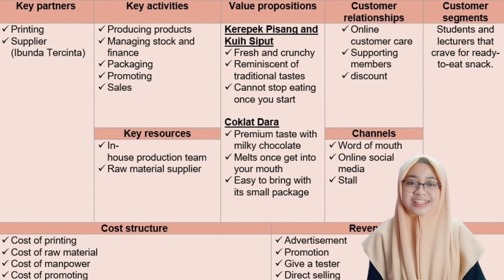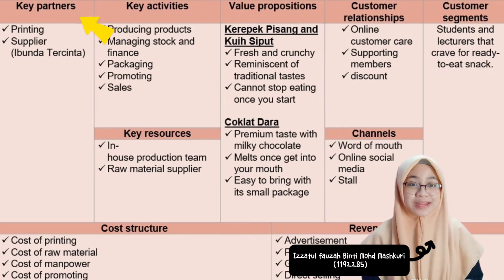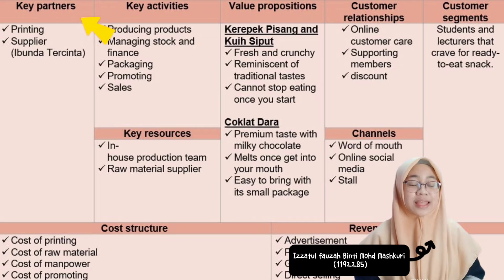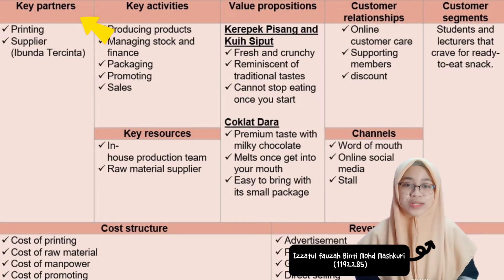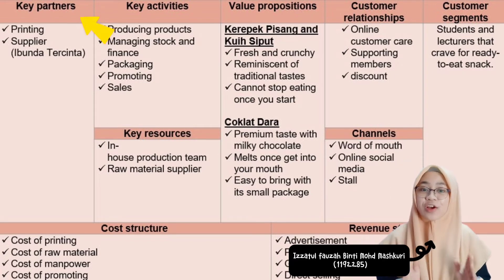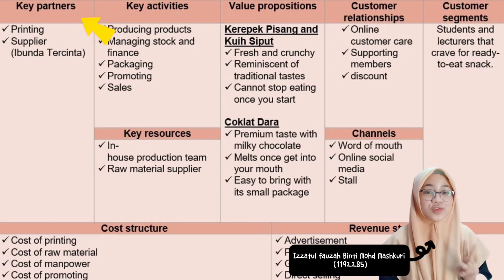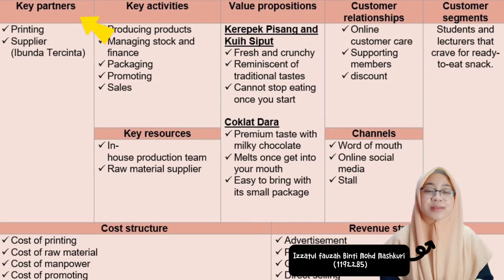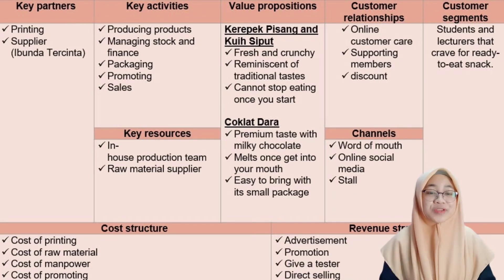Next is the key partners. The key partners is the network of suppliers and partners that make the business model work. In homemade darah, we have two key partners which are: first, printing; and second, suppliers and their teaching.